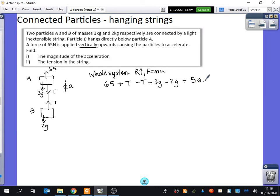And I'm going to try and find out what the acceleration is. So I have 65 minus 3G minus 2G. So that's 65 minus 5G. I'm going to divide that by 5 and that will give me the acceleration.